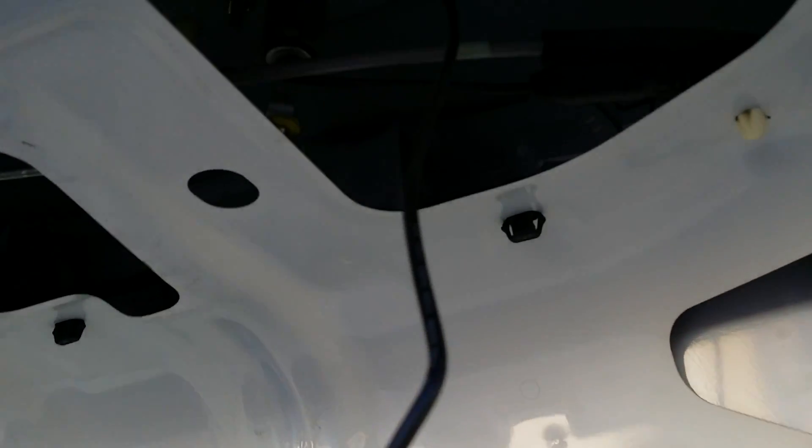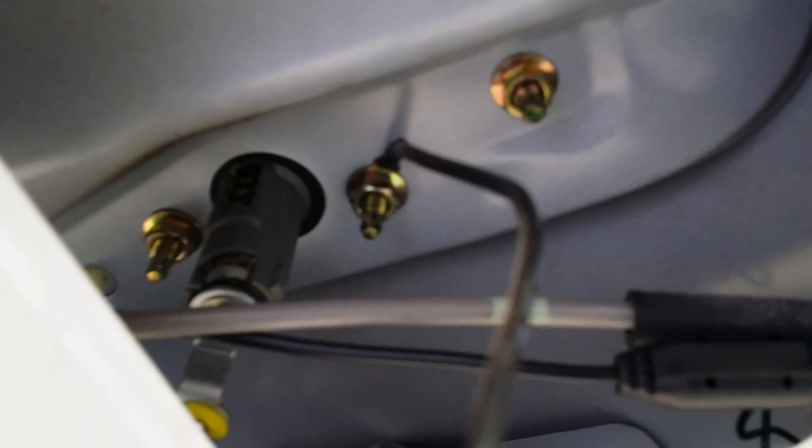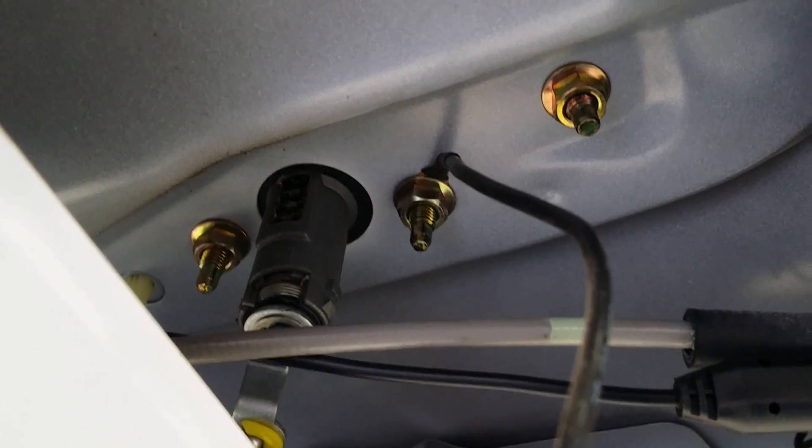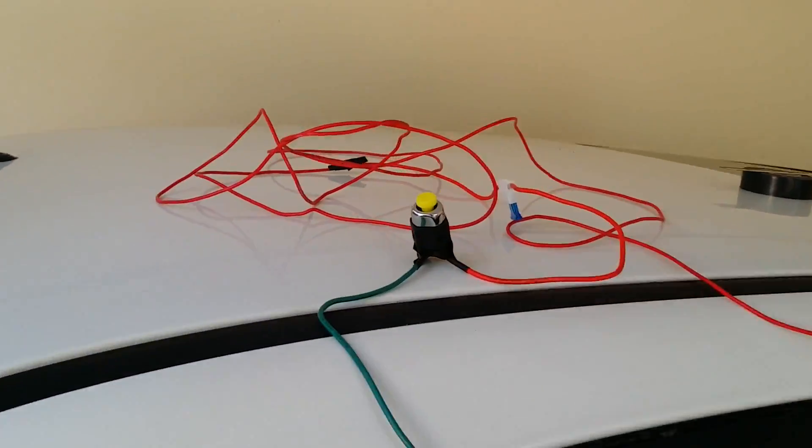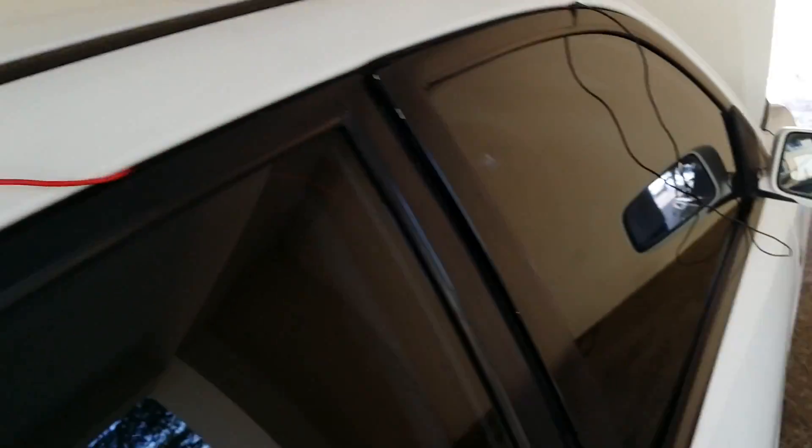Next, connect the ground wire to a properly grounded part of the trunk. For testing purposes, I went ahead and connected the 12V constant wire to the positive lead of the battery.